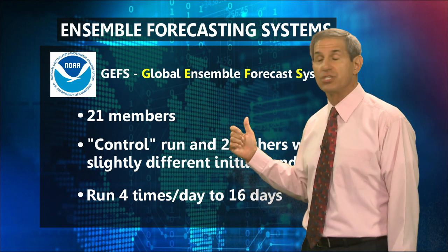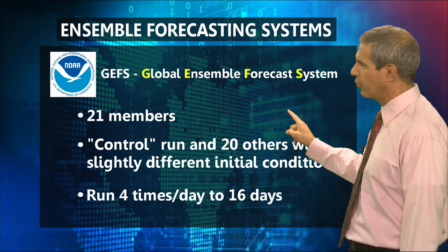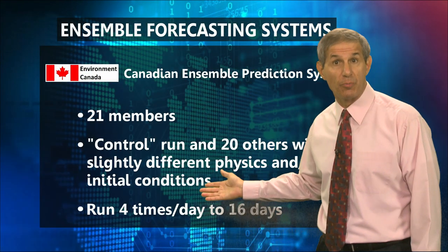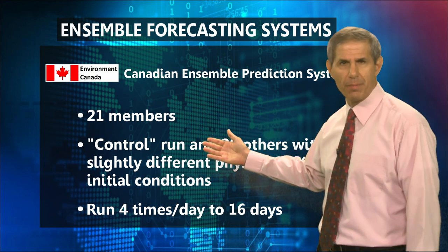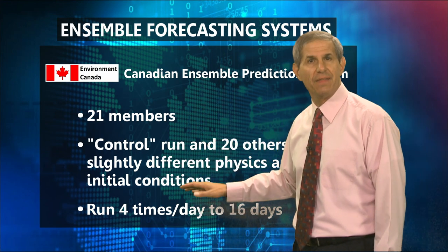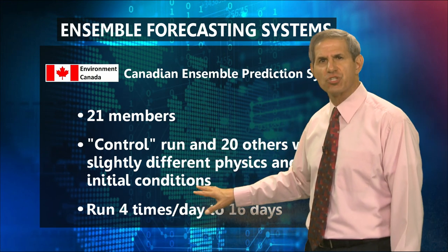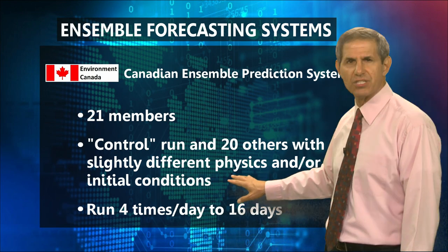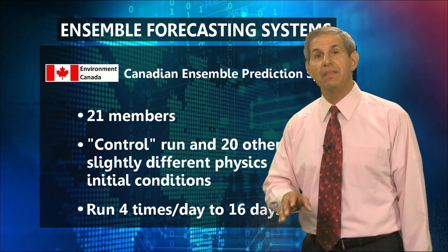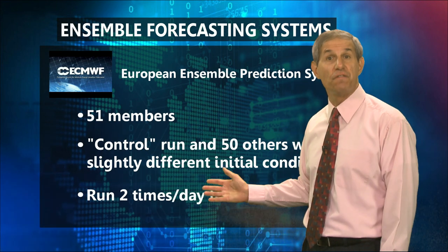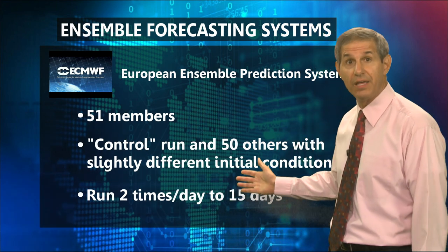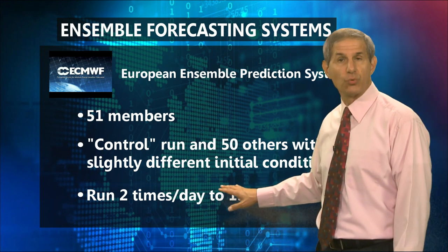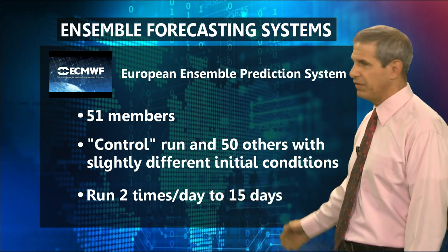The spaghetti in 12-Day Trends is from the global ensemble forecast system. Environment Canada also has an ensemble prediction system with 21 members — the control run — and they get their spaghetti by tweaking both the initial conditions and the physics of the model. And finally, the European Centre's ensemble system has 51 members, all created by making slight changes to the initial conditions. It's run twice a day, out to 15 days.